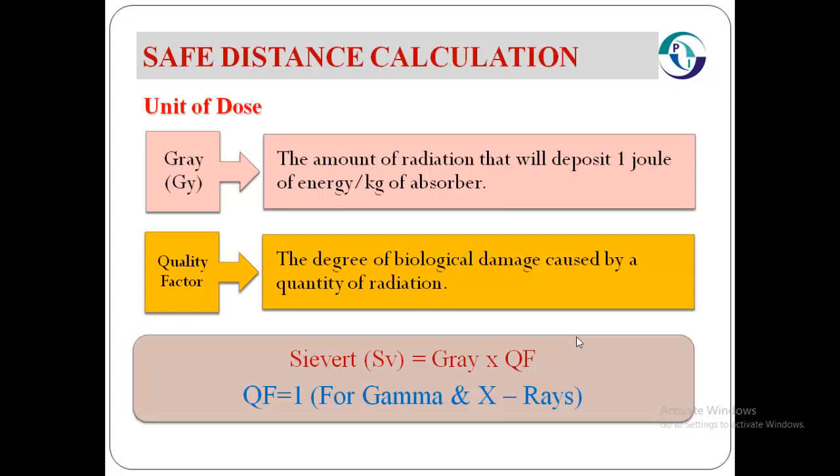The units of dose are Gray (Gy) or Sievert (Sv). Gray is the amount of radiation that will deposit one joule of energy per kilogram of absorber. To convert Gray to Sievert, we must know about the quality factor of the radiation sources. The quality factor is the degree of biological damage caused by a quantity of radiation.